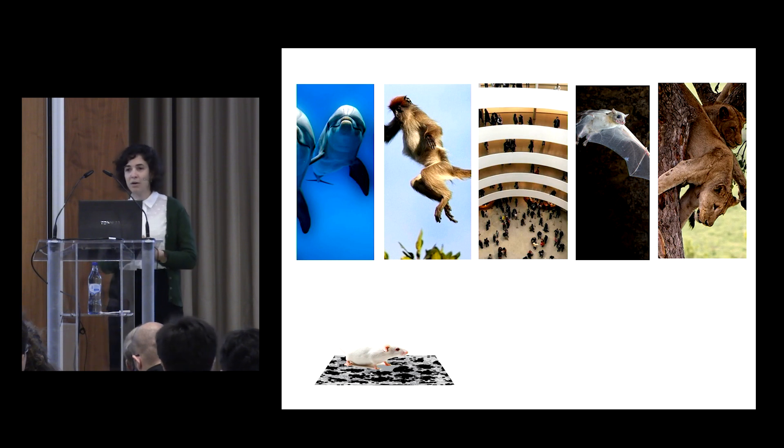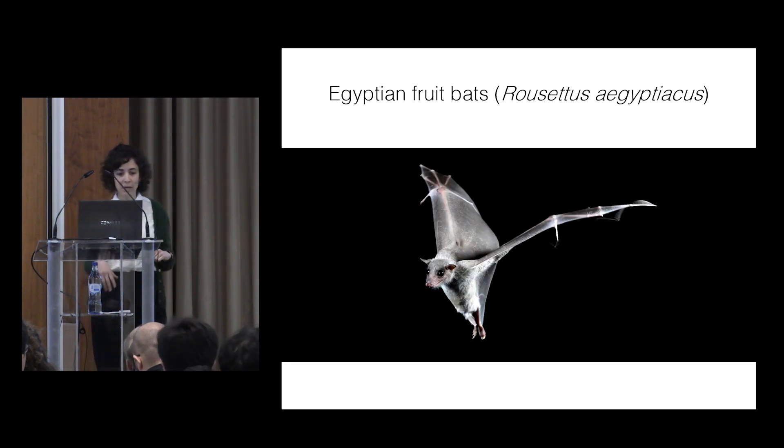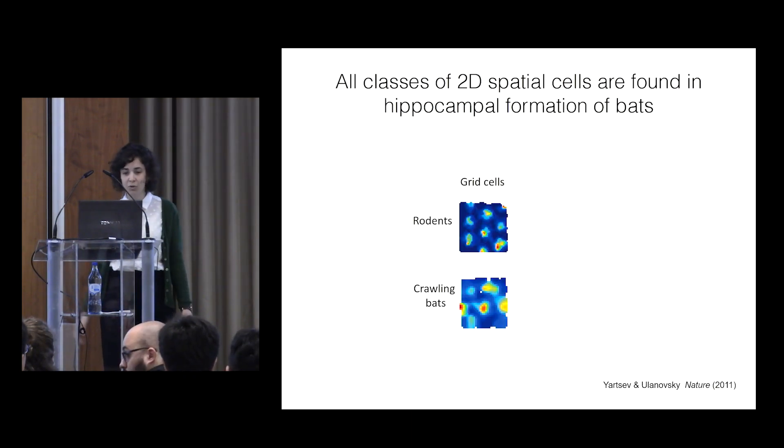How is space represented in the brain in 3D? And so we turned to the flying mammal, the Egyptian fruit bat.